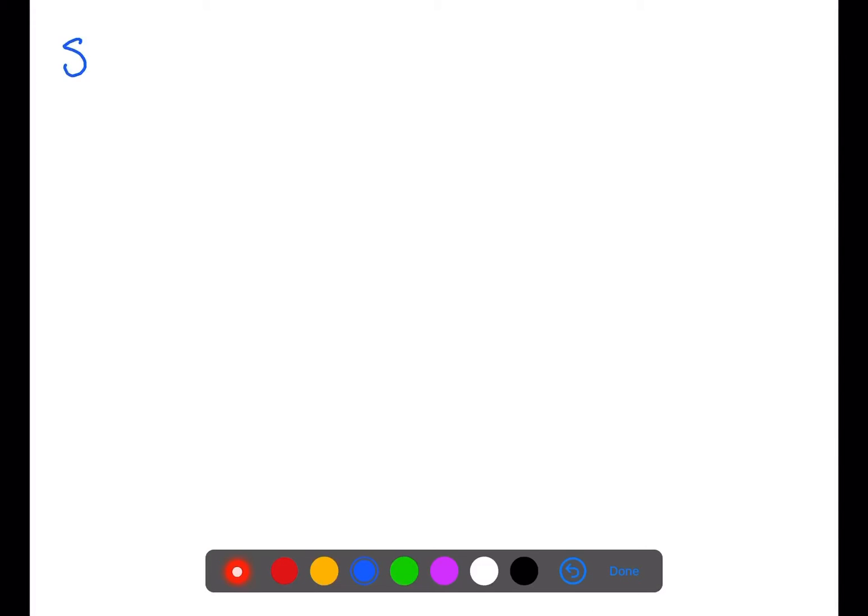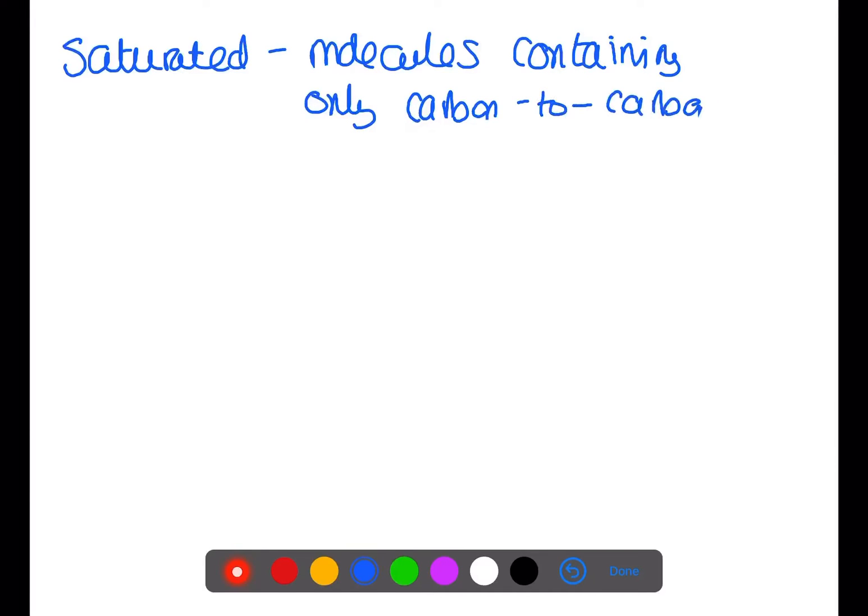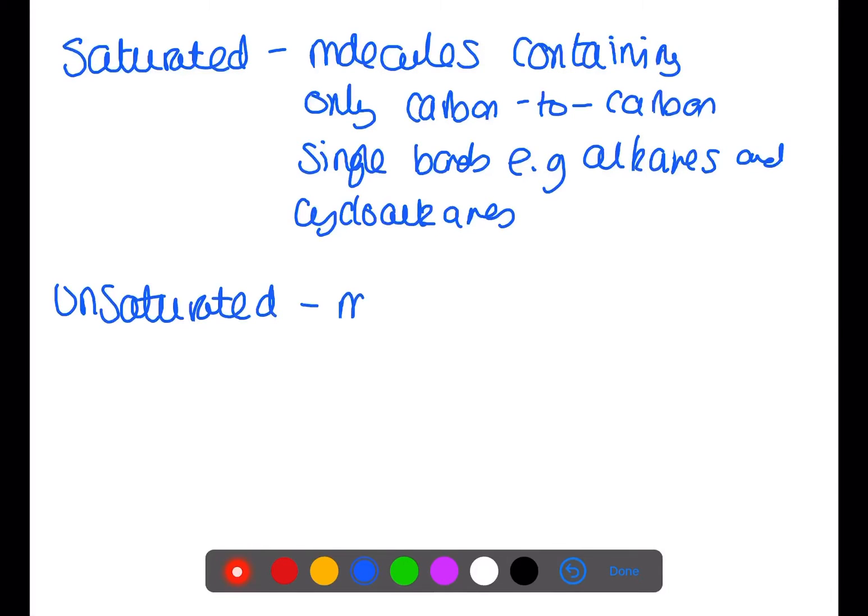Hi and welcome back to my channel. Today we're going to be looking at the test for unsaturation. First of all, let's define the words saturated and unsaturated. A saturated molecule is one which contains only carbon-to-carbon single bonds, for example the alkanes and the cycloalkanes. An unsaturated molecule contains carbon-to-carbon multiple bonds, for example the carbon-to-carbon double bond in the alkenes.